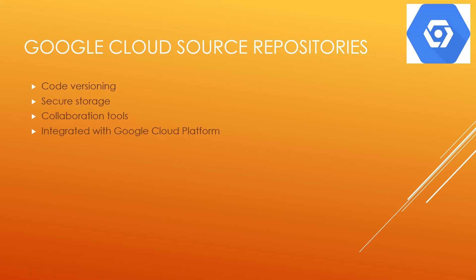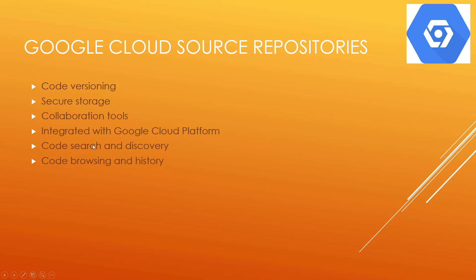Next is integration with Google Cloud Platform. Cloud Source Repositories seamlessly integrates with other Google Cloud services. You can easily connect your repositories to services like Cloud Build for continuous integration and deployment — CICD. The next one is Code Search and Discovery: Cloud Source Repositories provides a powerful search functionality, allowing you to find code snippets or files very quickly. This feature helps streamline development and code reuse. Then there is Code Browsing and History: you can browse your code base, review commit history, and view side-by-side differences to understand changes made to your code over time. Also, there is GitHub Integration: Cloud Source Repositories offer GitHub integration, allowing you to automatically mirror repositories from GitHub to Cloud Source Repositories, simplifying migration of code bases and enabling you to take advantage of Google Cloud services.